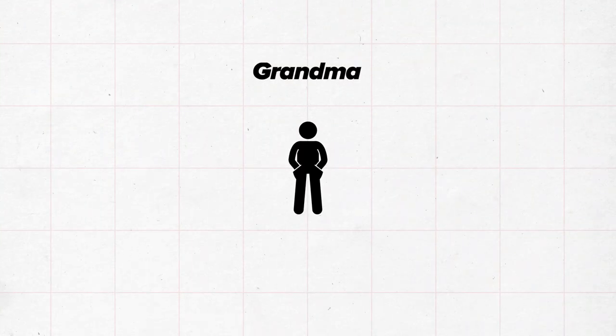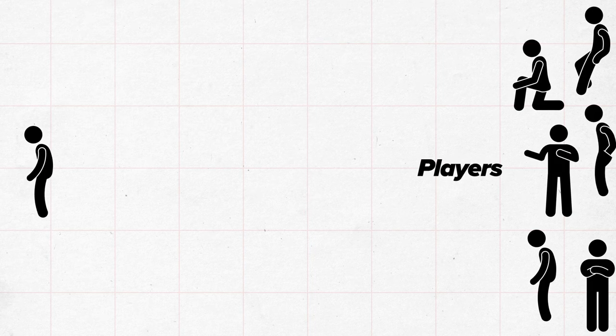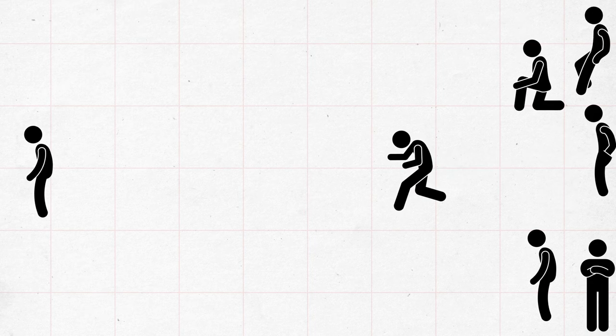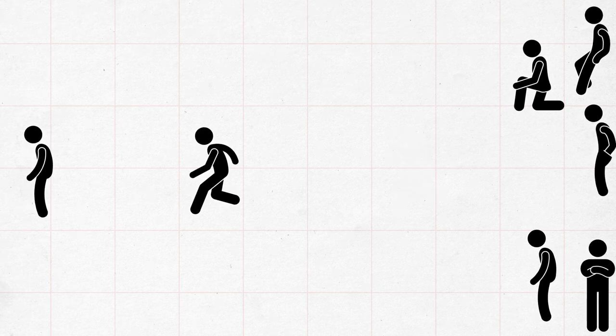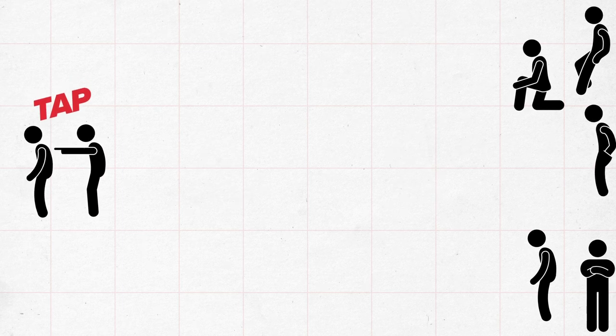Choose one member of the group to be Grandma. They stand at one end of the room. The rest of the group are the players and go to the opposite end of the room. The aim of the game is for one of the players to get to Grandma and tap them gently on the back.